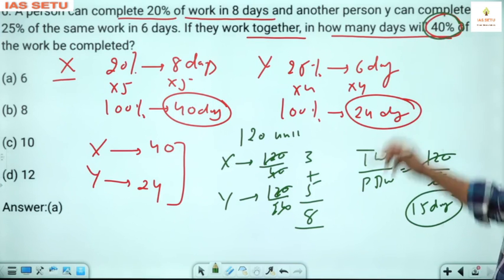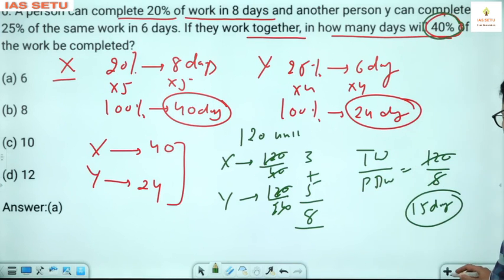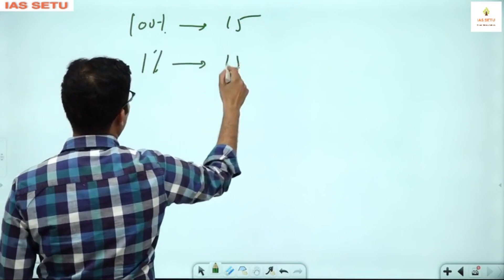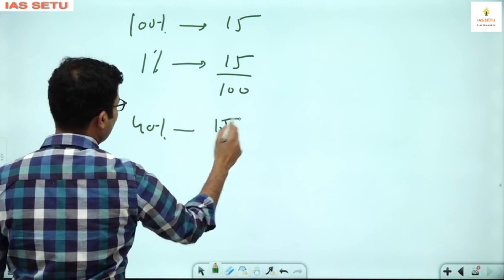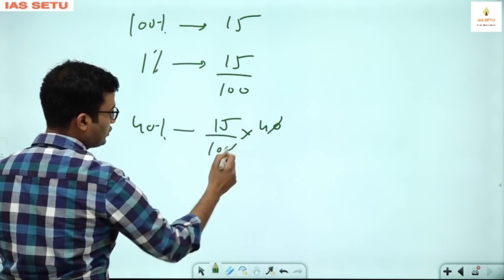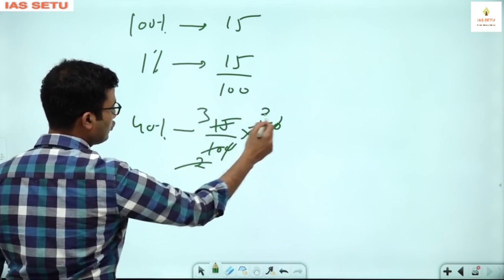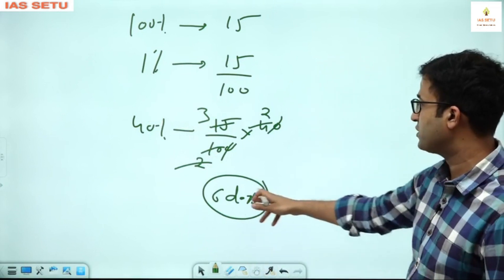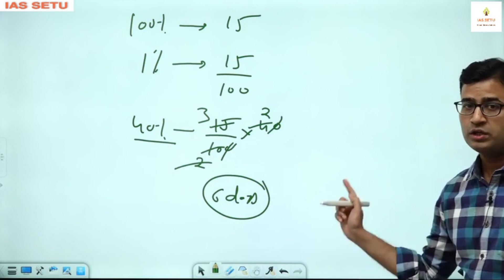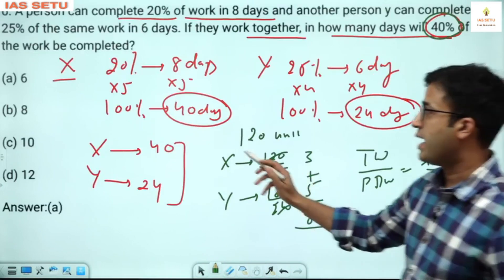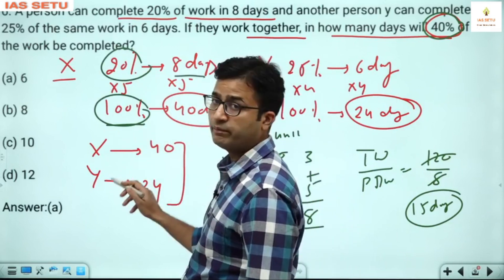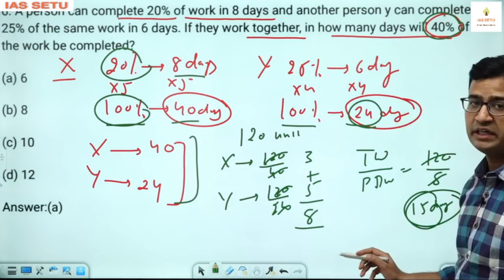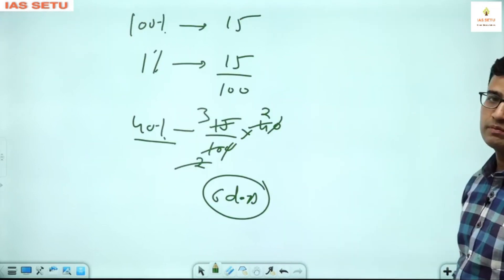But the question asks for 40 percent of work, not 100 percent. Step 4: 100 percent work takes 15 days, so 1 percent takes 15 divided by 100 days, and 40 percent takes 15 divided by 100 into 40 equals 6 days. Together X and Y will complete 40 percent of work in 6 days.